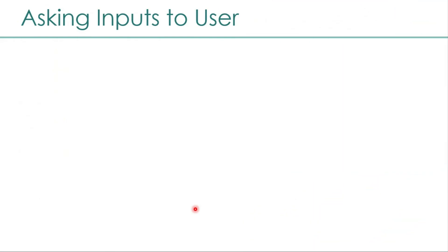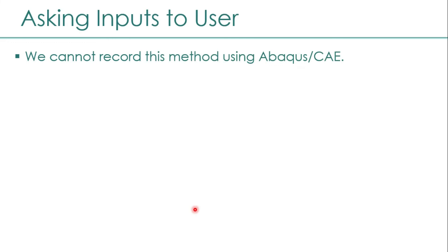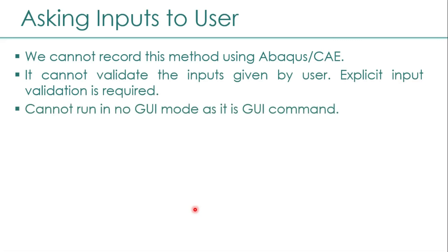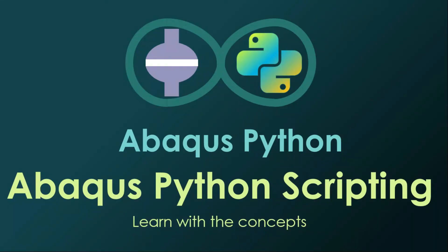To recap: these GUI input methods cannot be recorded in Abacus CAE, unlike most other scripting methods. The `getInput` method does not restrict what the user can type, so input validation must be handled explicitly. Finally, any script using these GUI commands cannot be run in no-GUI mode. Stay safe, be hungry to learn. See you — bye!